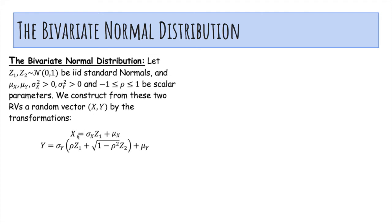So first, X will take z1, scale it by sigma x, and add mu x. What this will do is make X have a normal distribution with mean mu x and variance sigma squared x. You can play with the transformation.